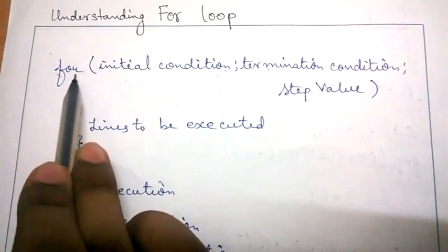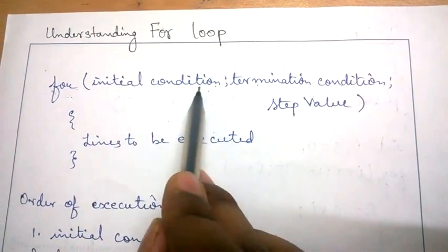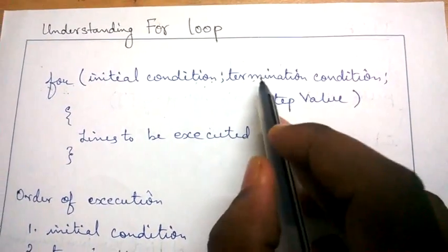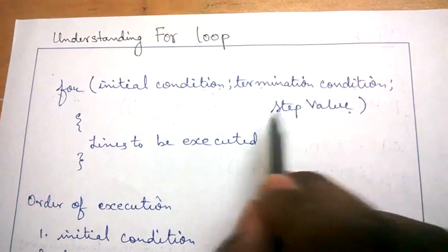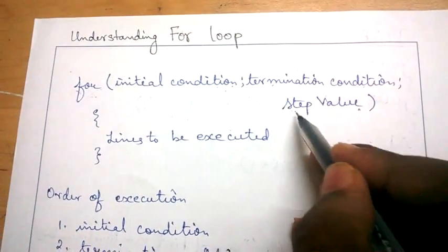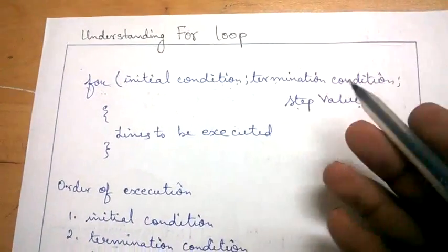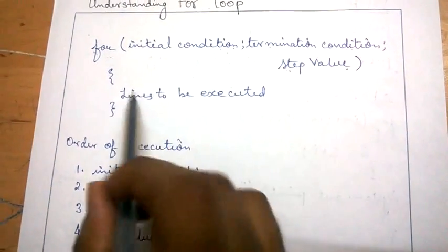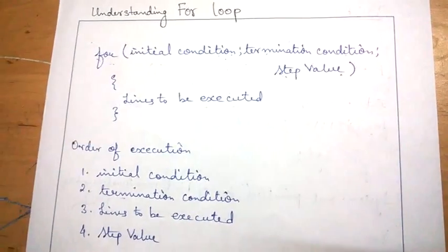This is a for loop. The first part is the initial condition — the value from which you are going to start the loop, meaning the variable. The second is the termination condition — the value at which you are going to stop the loop. Then there are the step values — the value with which you are going to increase the initial condition step by step as the program proceeds. And these are the lines to be executed — the lines which you are going to execute multiple number of times.